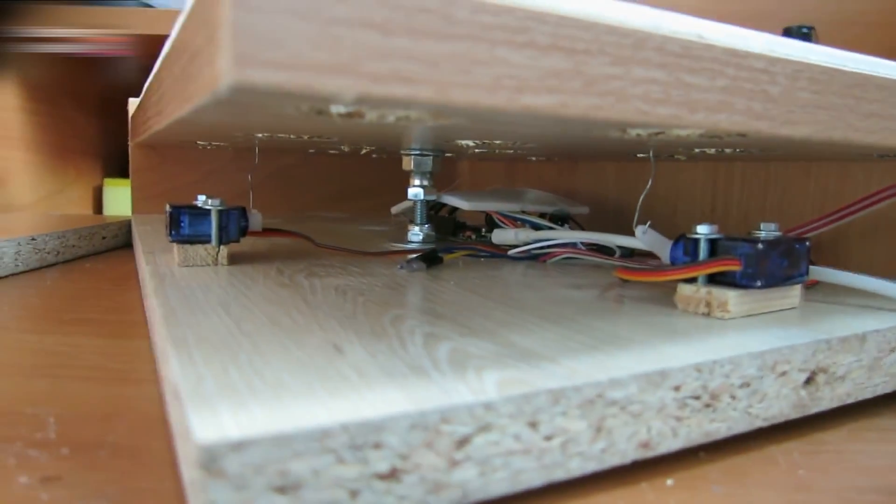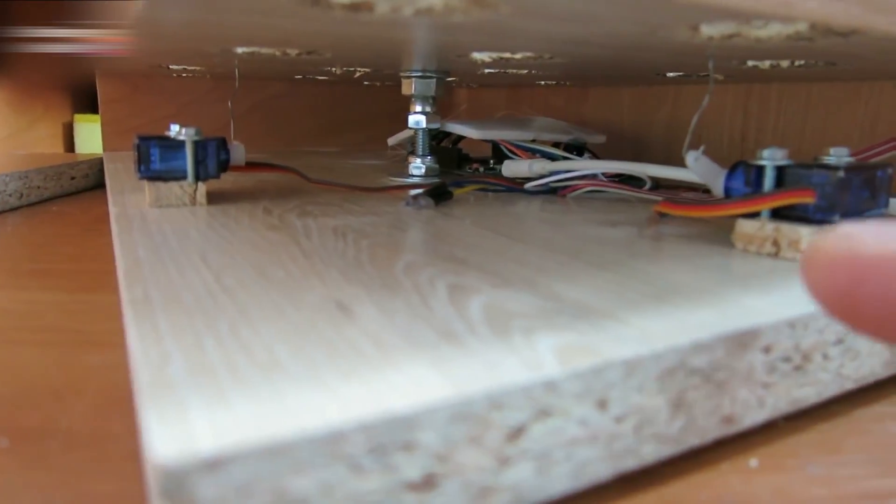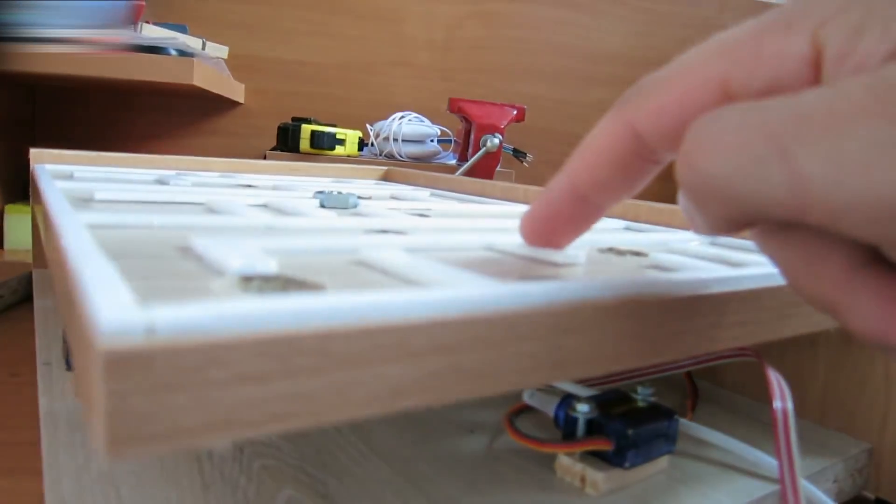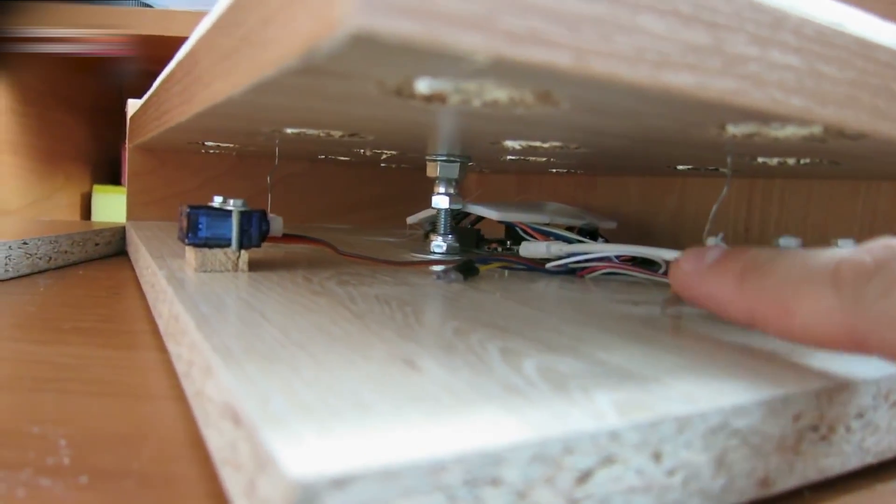This is the inside view. Connect the servo arms with wires to the top. Glue the wires to the top and bend them to even the top.